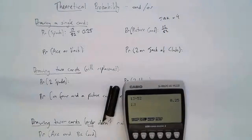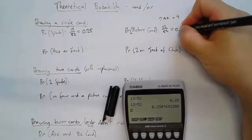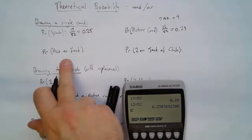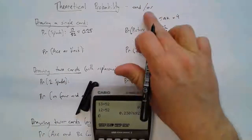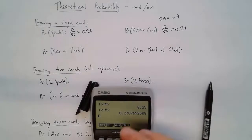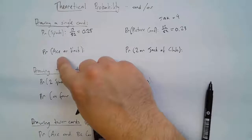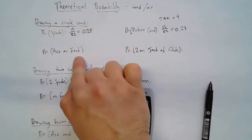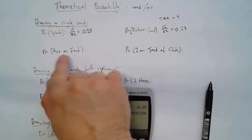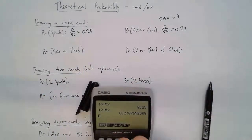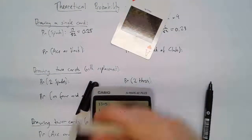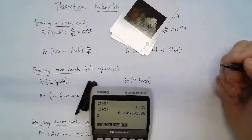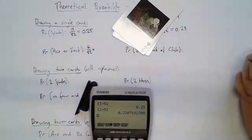Probability of an ace OR a black card — this is where we start getting OR. If I pull out a card, it could be an ace or a black card. Logically, that makes the probability higher than just one of them because I've got two options. So how many aces are there? There are four aces. OR means plus. How many black cards are there?